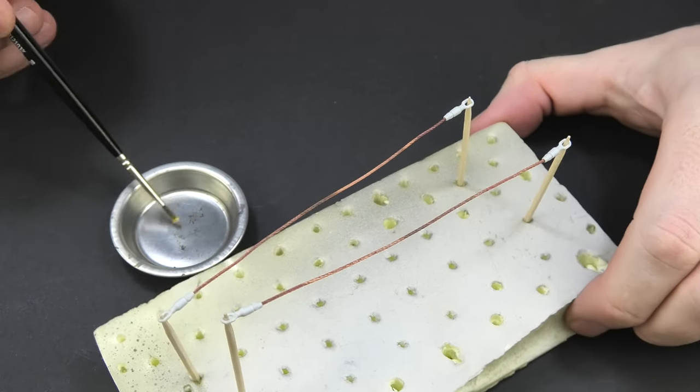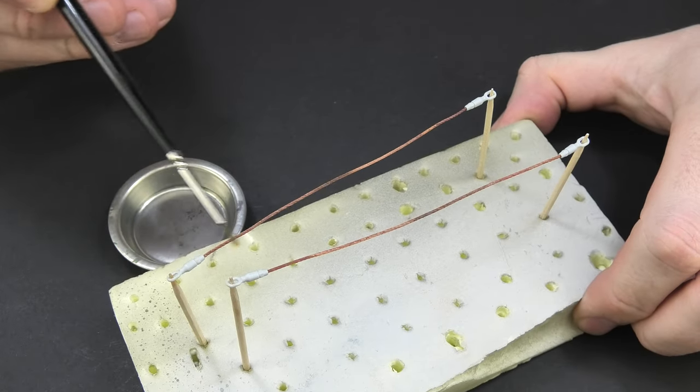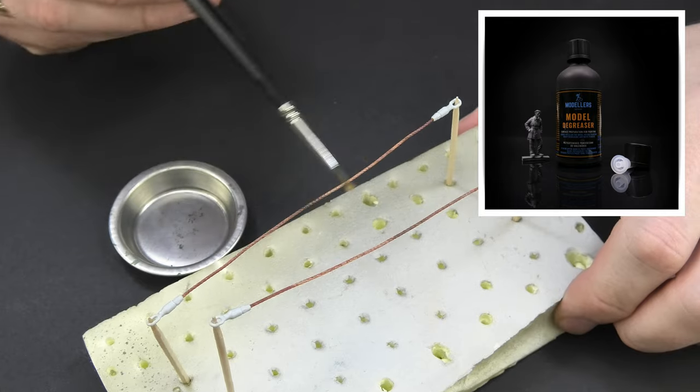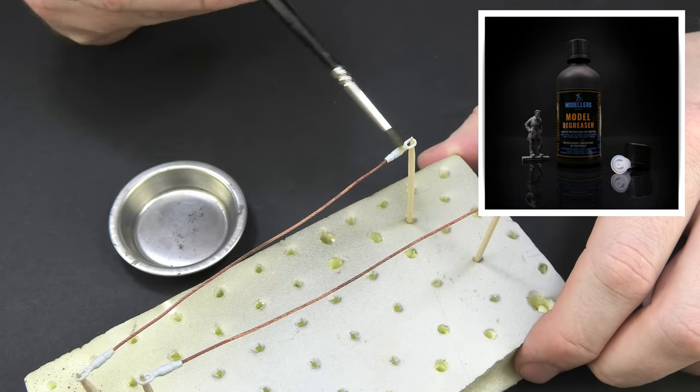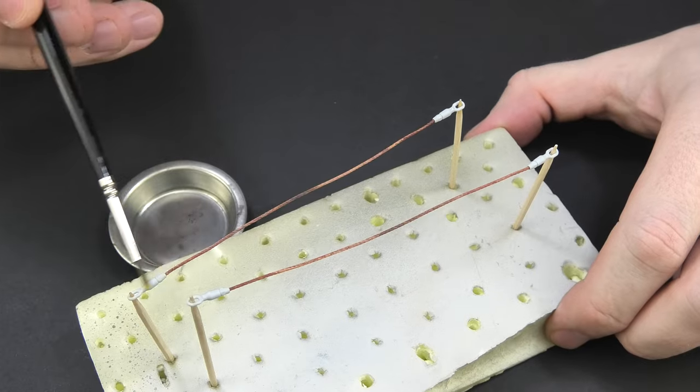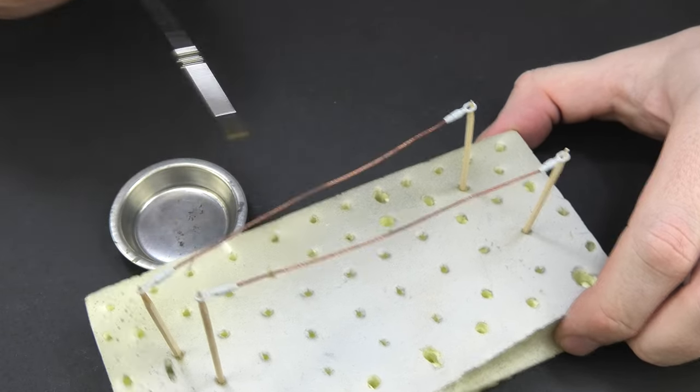Just before starting with painting I first clean them of dirt with model degreaser. Just wipe the elements with a brush soaked in this product. The degreaser evaporates very quickly so after a while you can start further work.